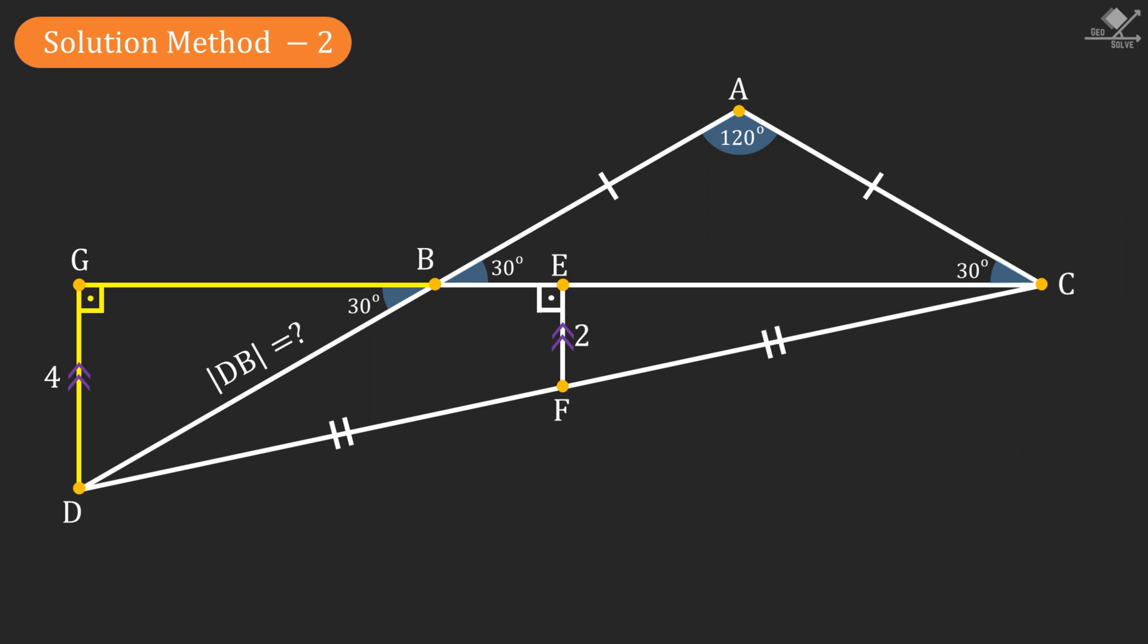Now we have a 30-60-90 triangle here and the hypotenuse will be two times the length of the line segment opposing 30 degree angle. So line segment DB will be 8 units.